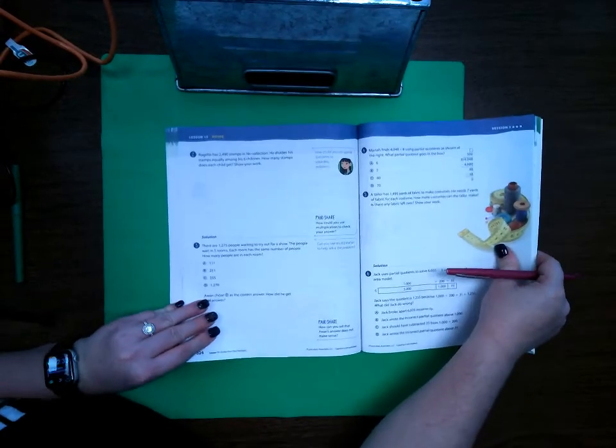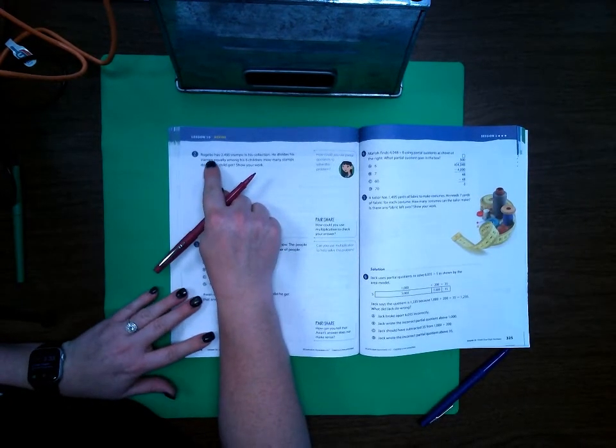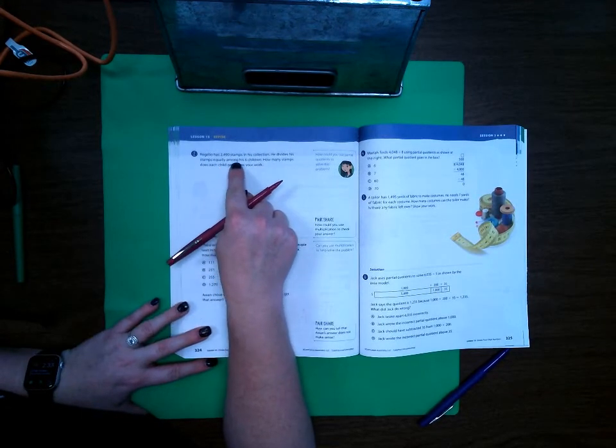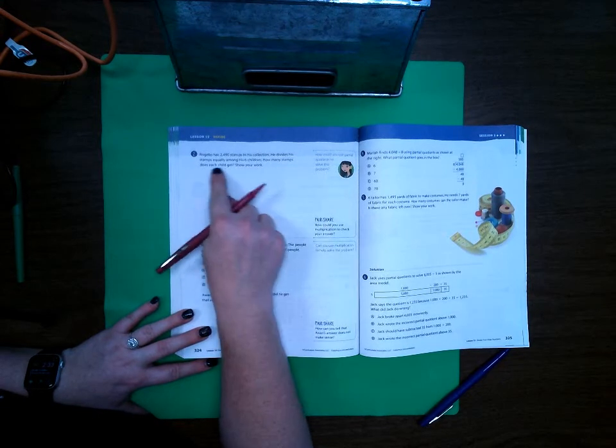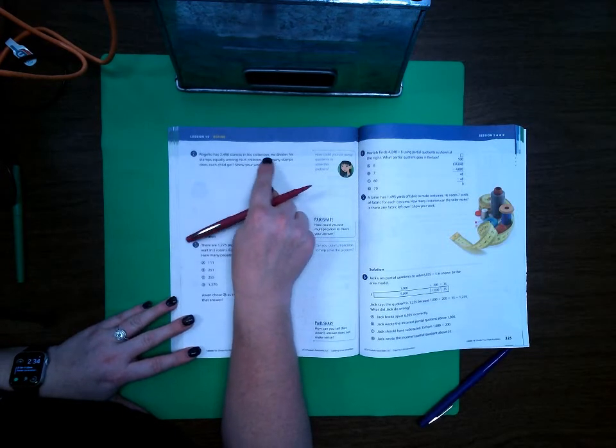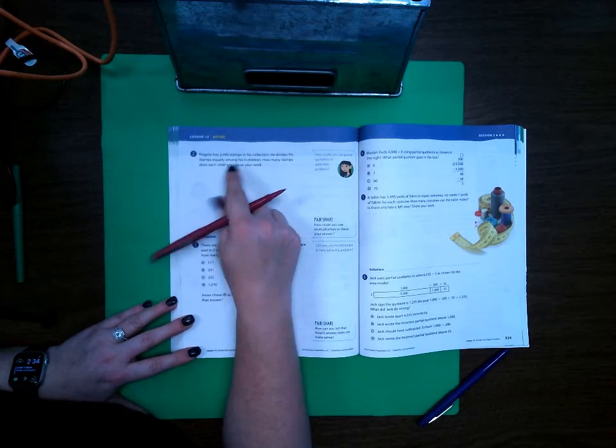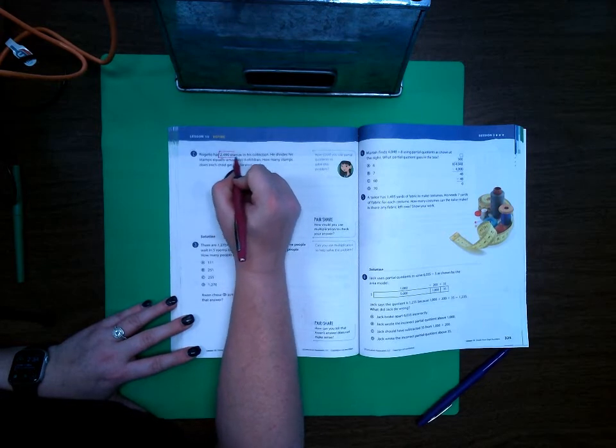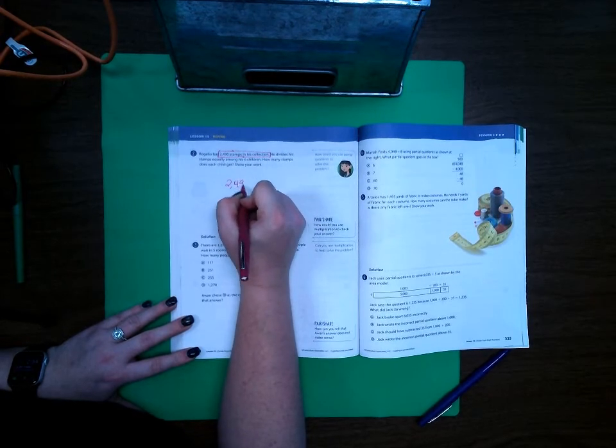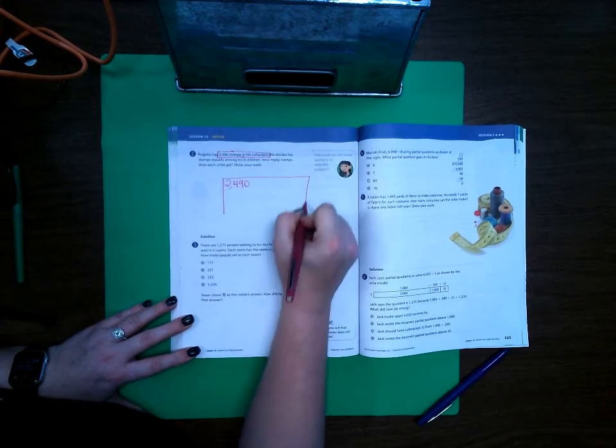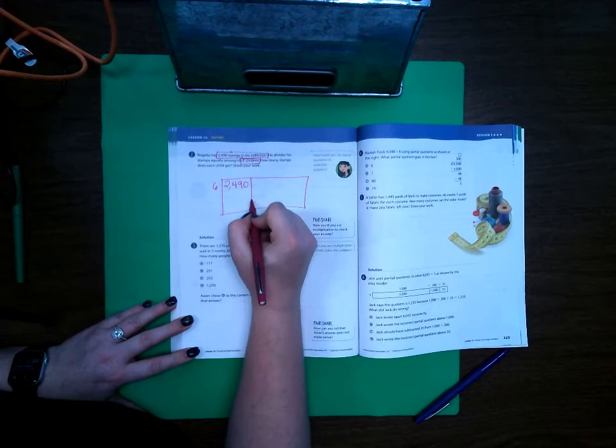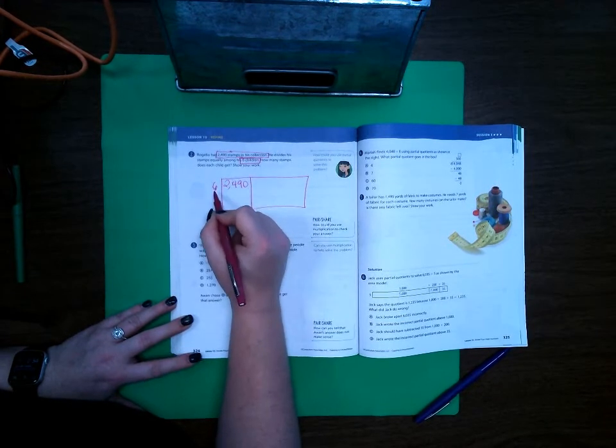At the top of 324 we have: Rogelio has 2,490 stamps in his collection. He divides his stamps equally among his six children. How many stamps does each child get? Show your work. Well, what is this problem about? It's about stamps being divided between children. What information is important? 2,490 stamps in the collection. So that means there's 2,490 total stamps, and we're dividing it by his six children.